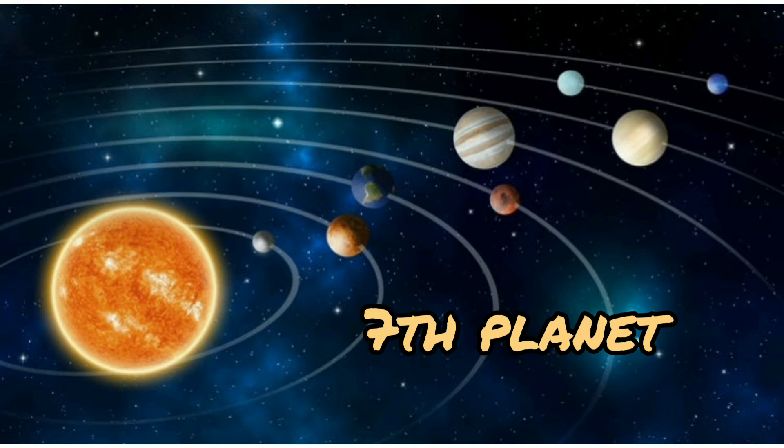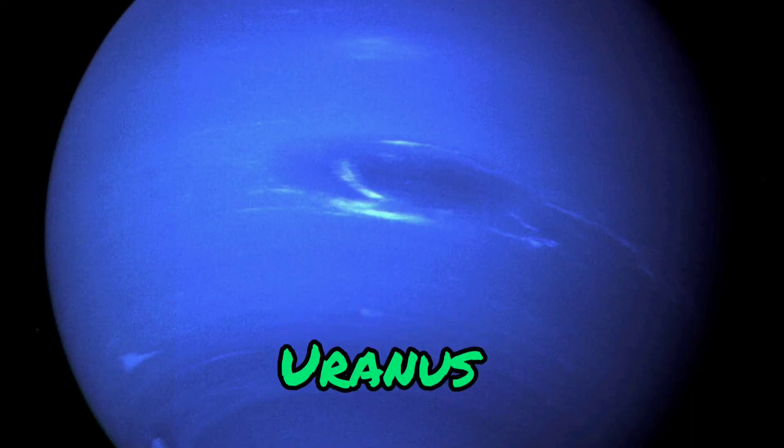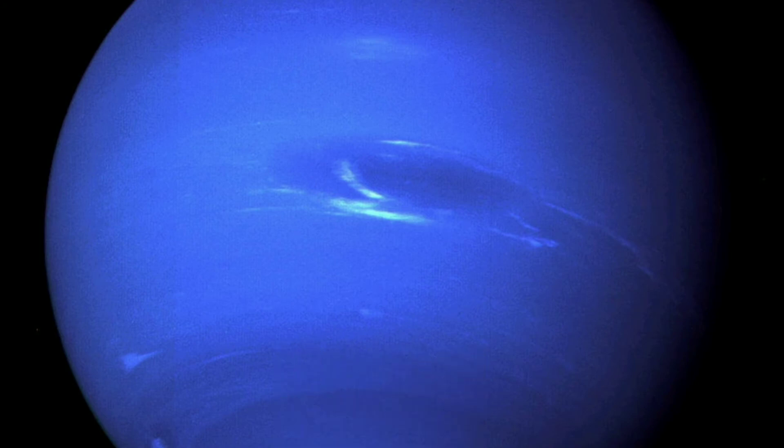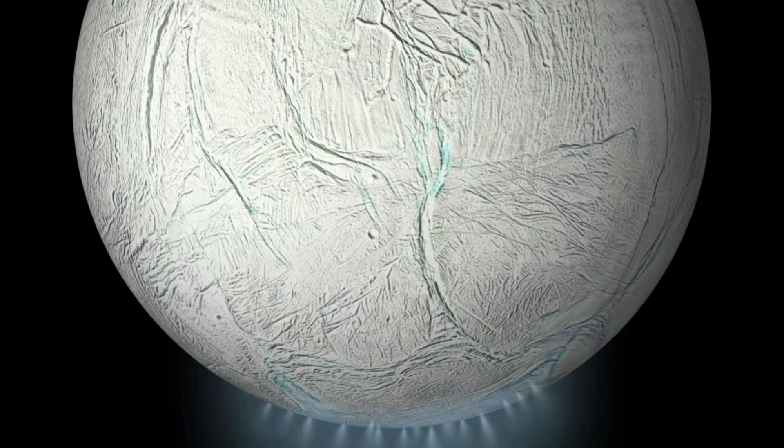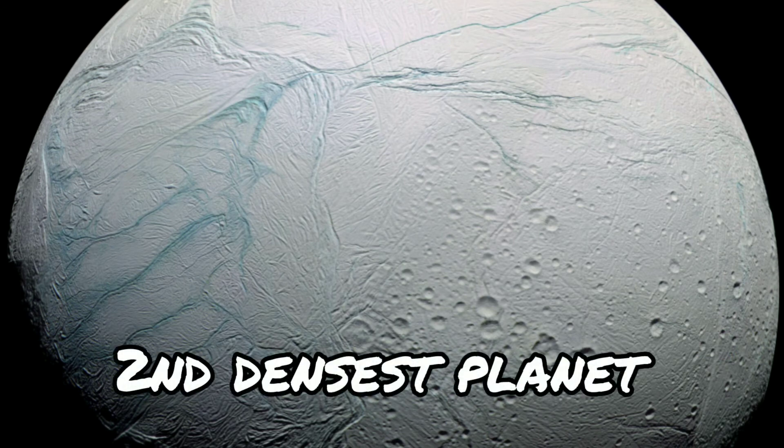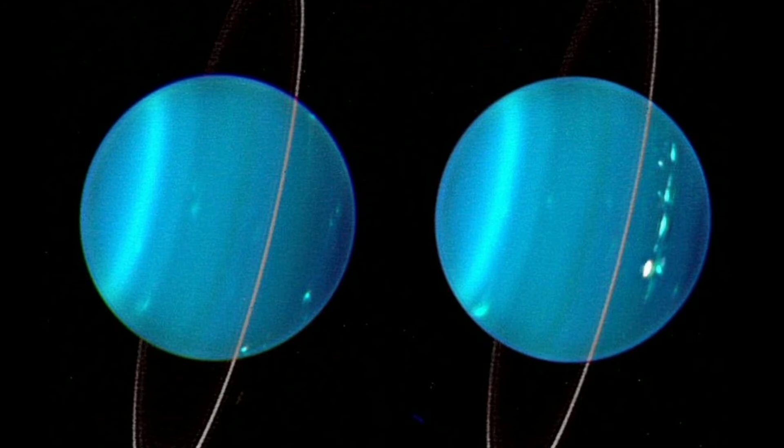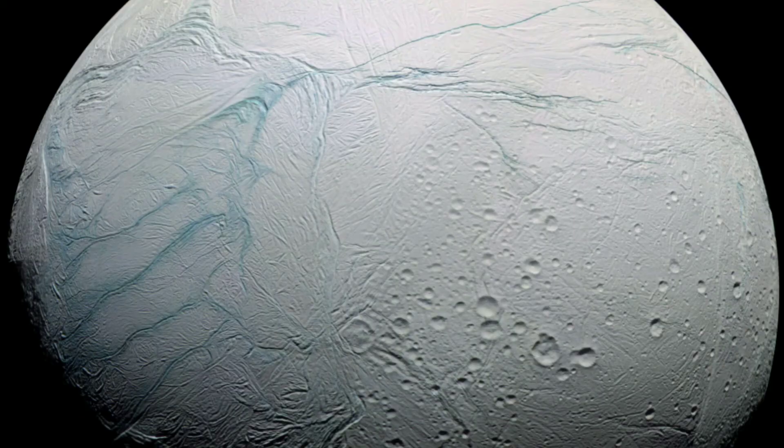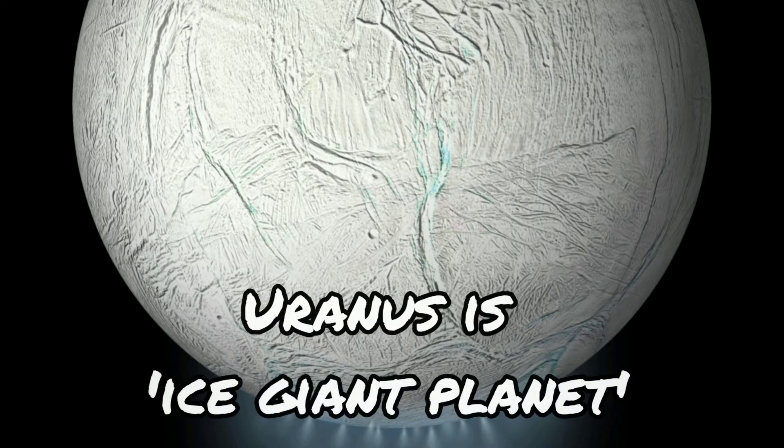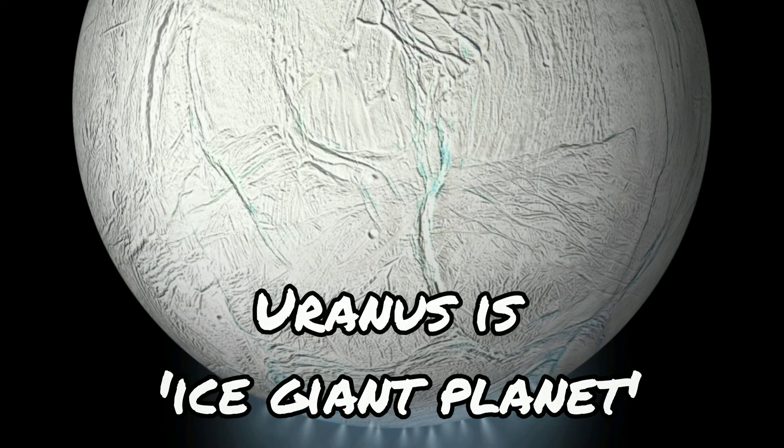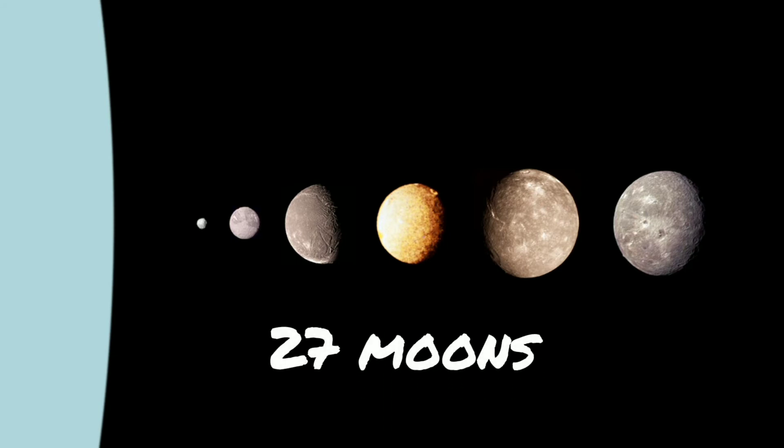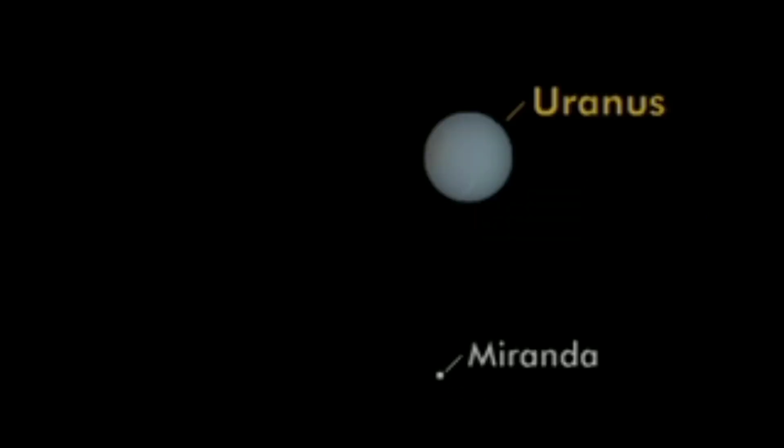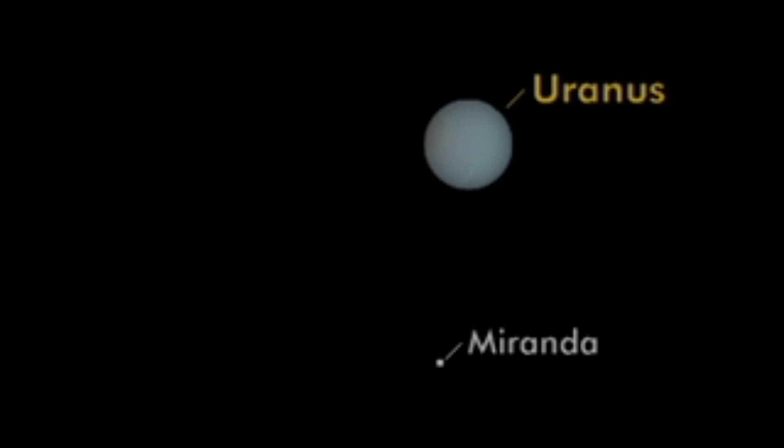Next planet of the solar system is Uranus. Uranus has no surface. It is the coldest planet in the solar system. Uranus is the second densest planet in the solar system. Uranus has rings. Uranus atmosphere contains ice. It is also known as ice giant planet. Uranus spins on its side. It has 27 moons. Uranus is the first planet discovered in the modern age. It can be seen through telescope.